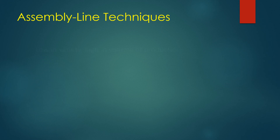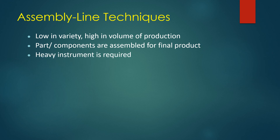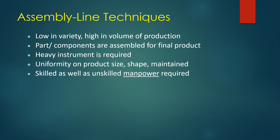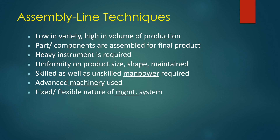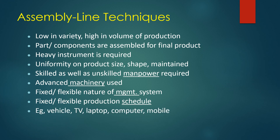Under assembly line techniques, there is low variety and high volume of production. Parts and components are assembled for the final product, requiring heavy instruments. There is uniformity in product size and shape. Skilled as well as unskilled manpower are used, and advanced machinery is used. It has a fixed as well as flexible nature of management system and production schedule. Examples include production of vehicles, TVs, laptops, computers, and mobiles.